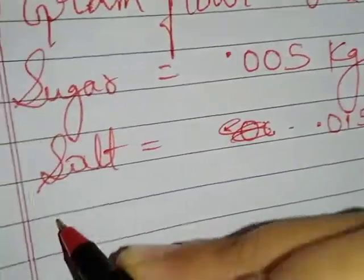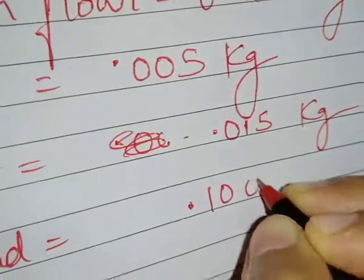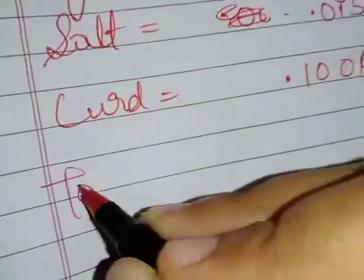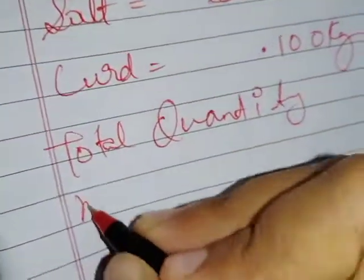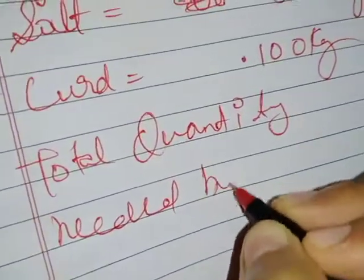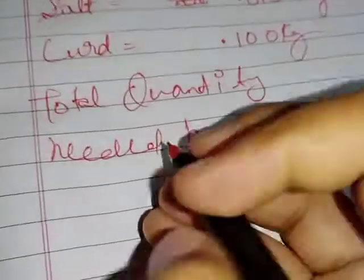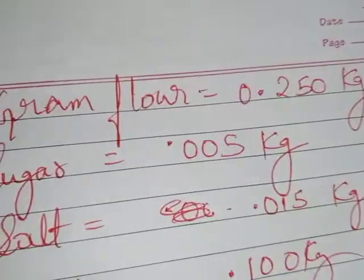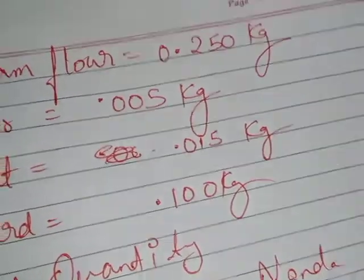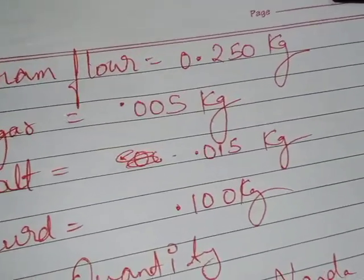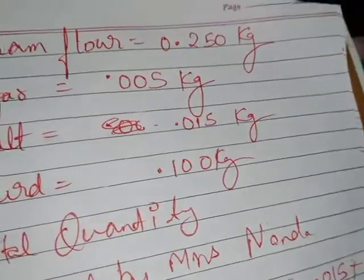And the last thing she wants is curd, how much? Point one zero zero kg. Total quantity needed by Mrs. Nanda equal to what is the total?